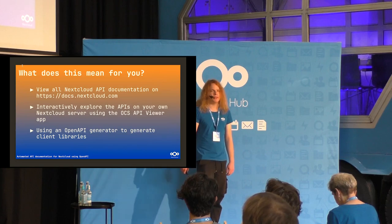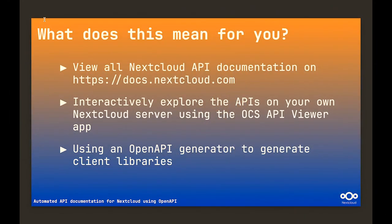So what does it mean for you? We have multiple ways to interact with the documentation now. On docs.nextcloud.com you can find all the documentation, though it's not really interactive yet. We also have a new app called the OCS API Viewer, which was also mentioned in the release presentation. It allows you to explore the APIs available on your server — you can actually try out the endpoints, send a request, get the response, and see it all happen on your server. This app is also installed on the conference instance so you can already try it out there without having to install anything.